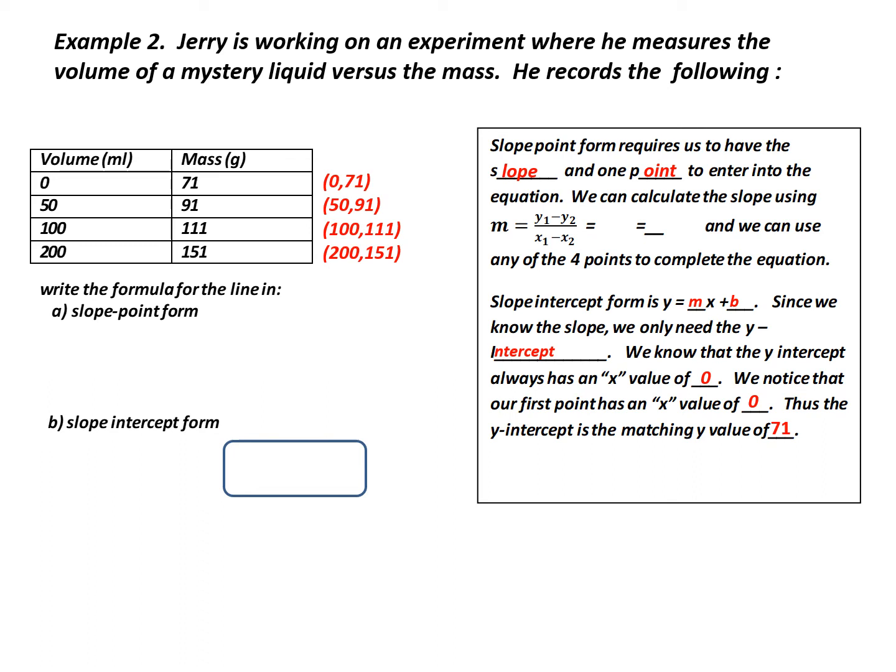Now, which two points should I use? Well, the answer is you can use any of them and you should get approximately the same answer. I've decided I'm going to work with the first two because I think they're the easiest to work with. So my y₁ is going to be 71. My y₂ is going to be 91. My x₁ is going to be 0 because it matches up with 71 and my x₂ is going to be 50. When I subtract these, 71 minus 91, I get -20. 0 minus 50, I get -50. I recognize that I can simplify this. A negative divided by a negative is positive. And 20 over 50, I can take a 10 out giving me 2/5.